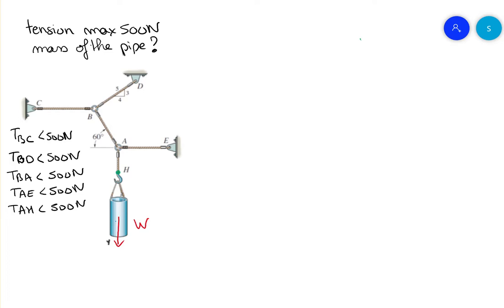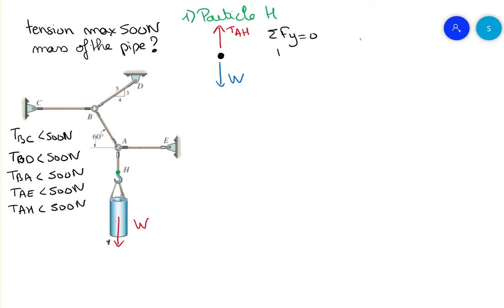First, I will use point H for the first free body diagram — the particle H. We have the weight, and we have TAH. When we do sum of forces on Y equals zero, we get TAH equal to W. So TAH must be less than 500 N, and therefore the weight must be less than 500 N.